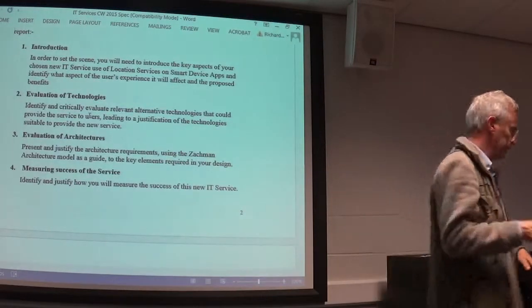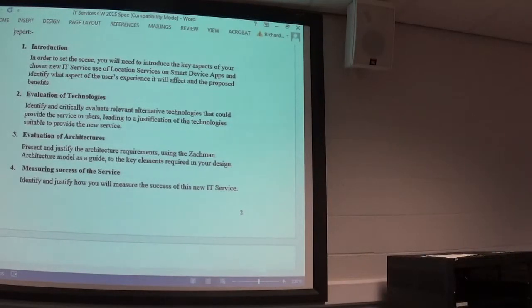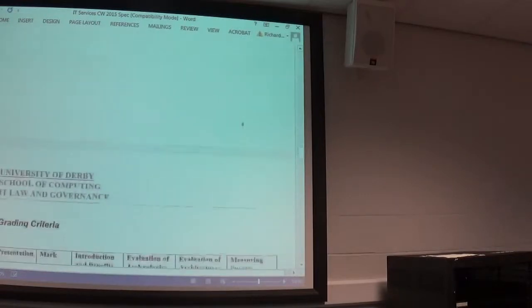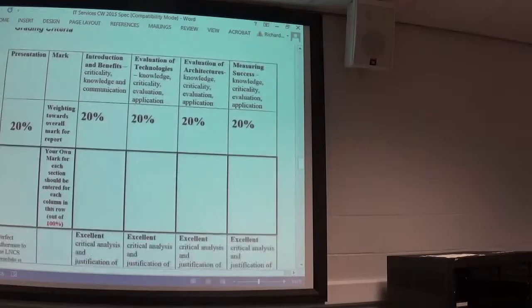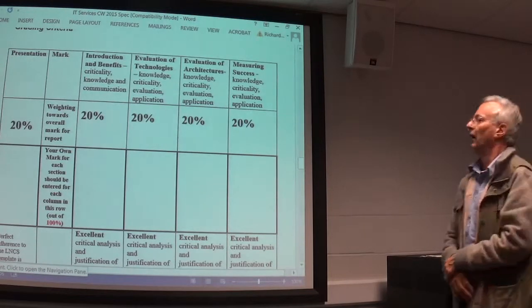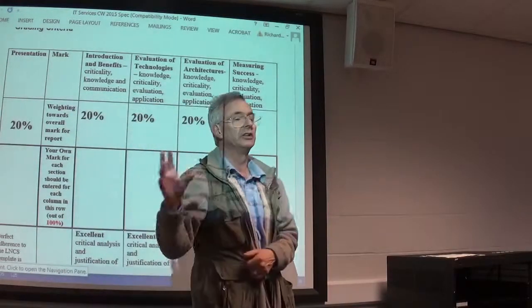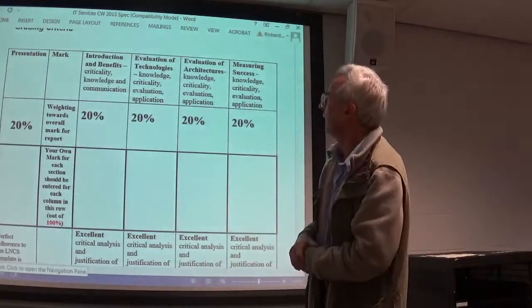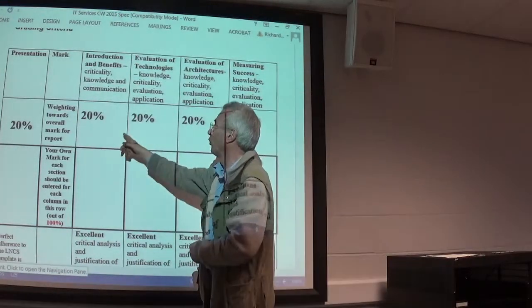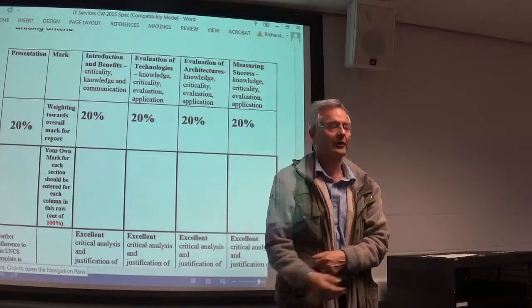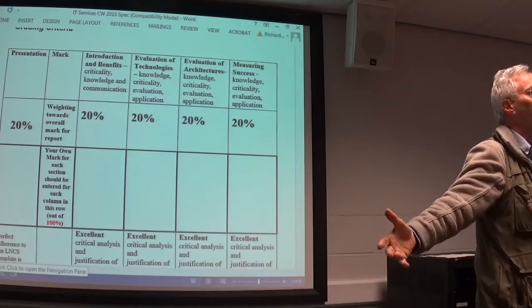And part of the reason for that is when you look at the assessment criteria at the bottom, you've got the usual 20% for presentation and all those things, and then four columns, and each of those four columns is one of those chapters.